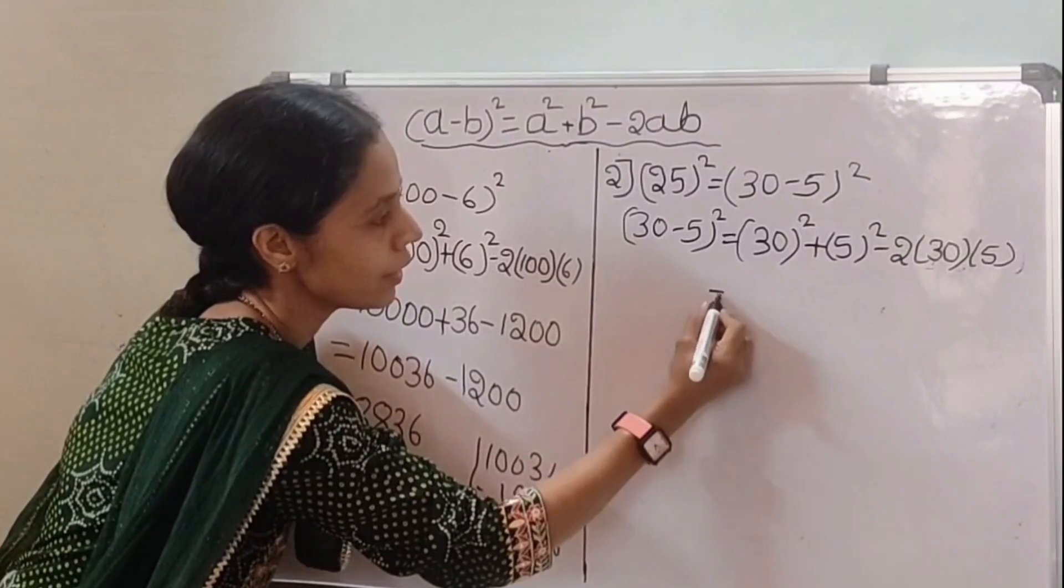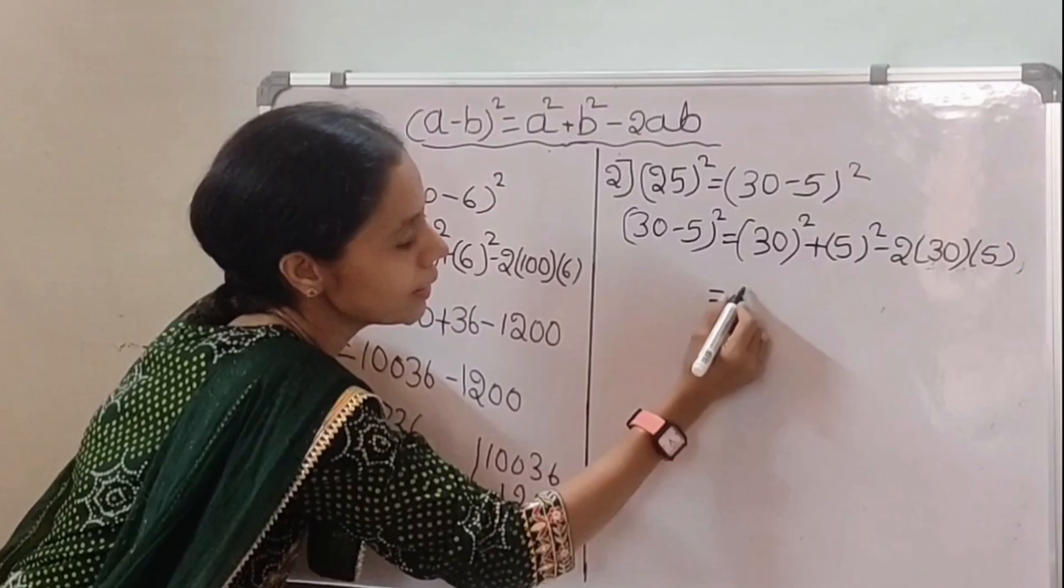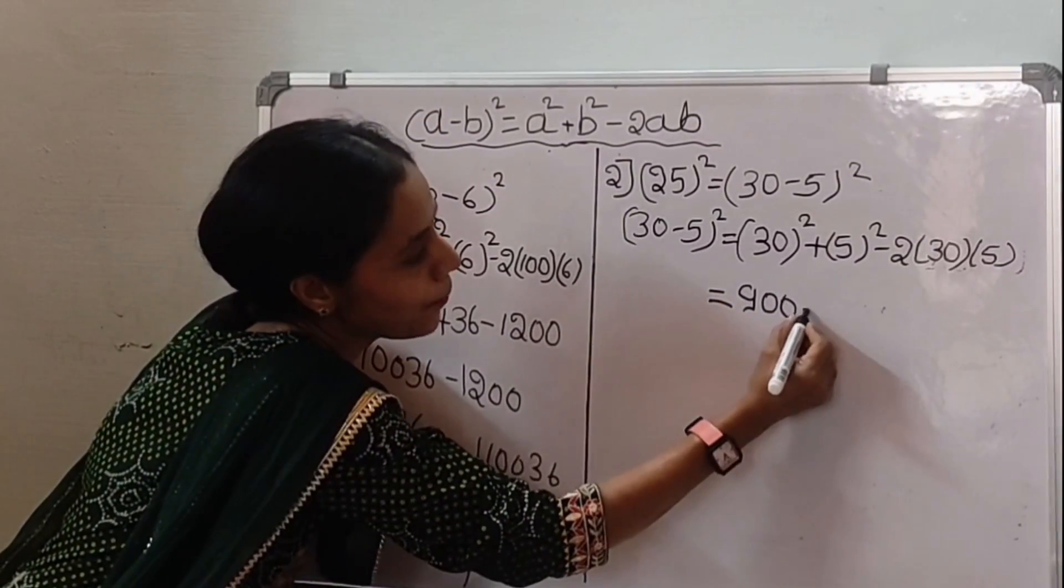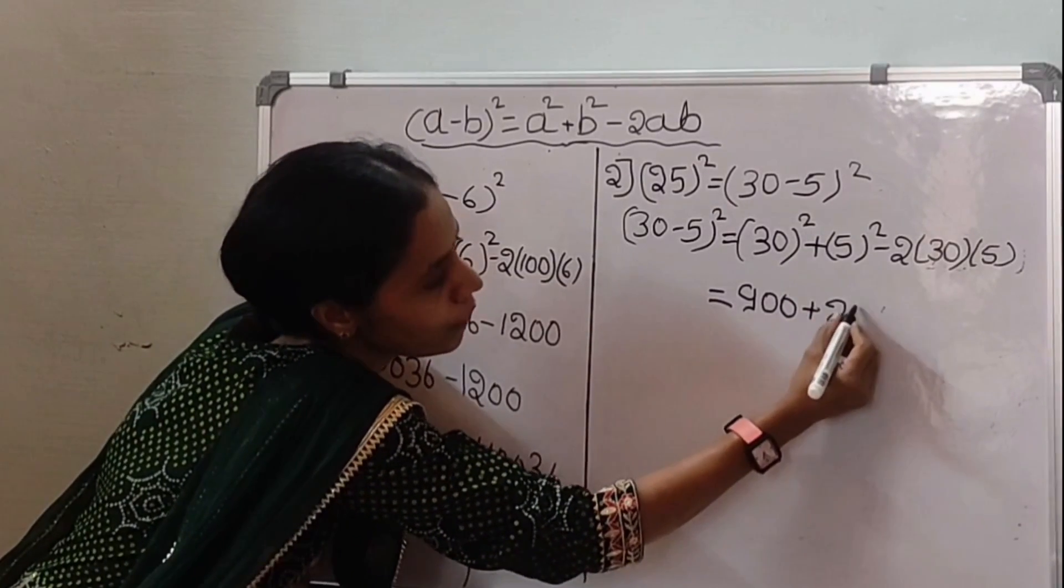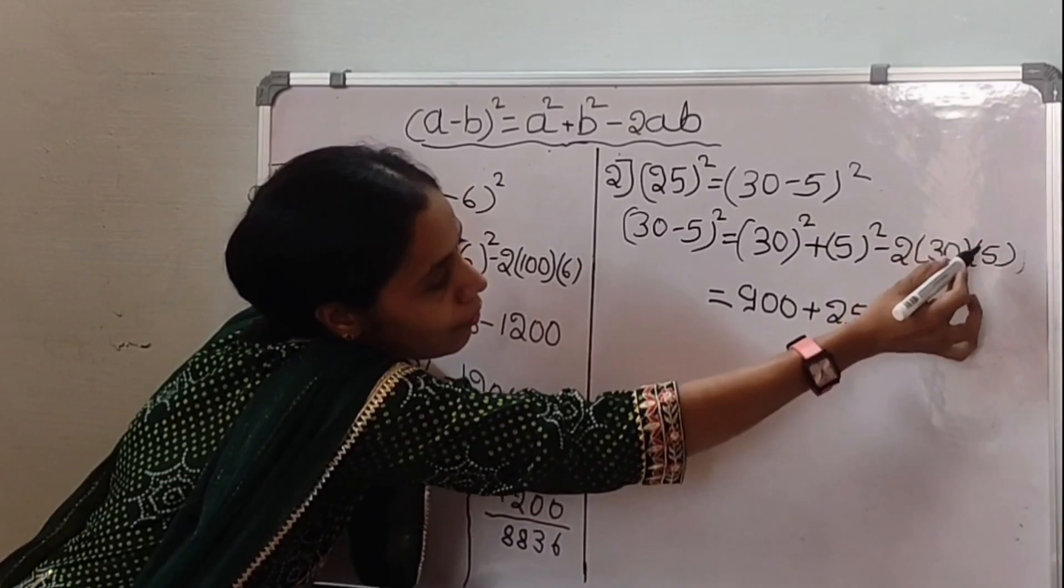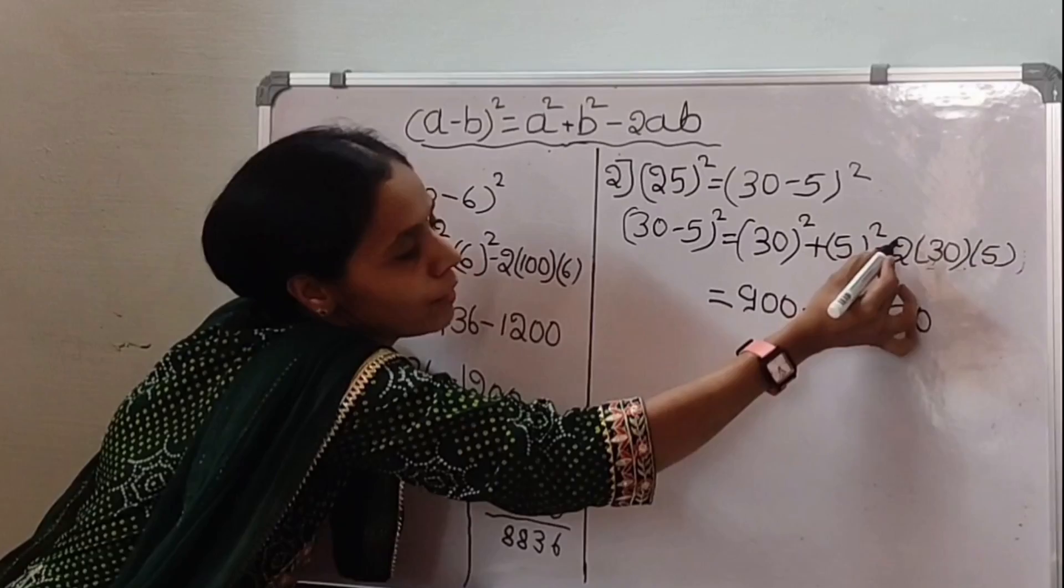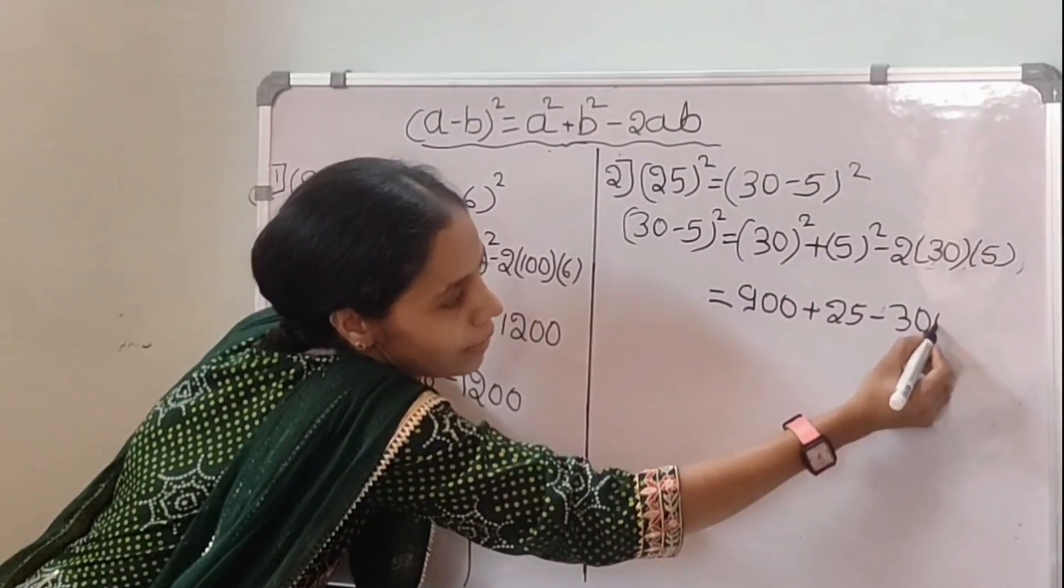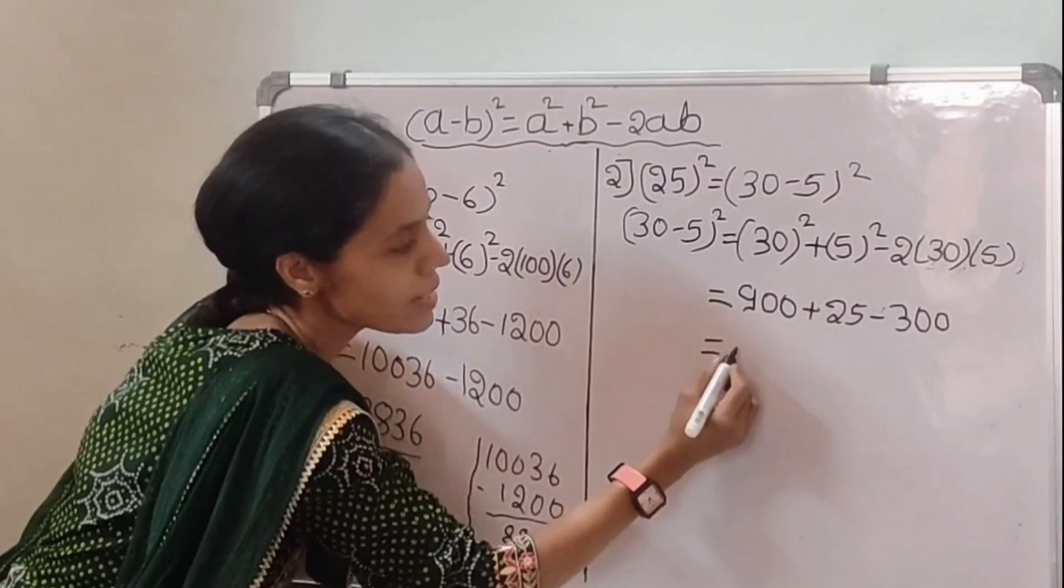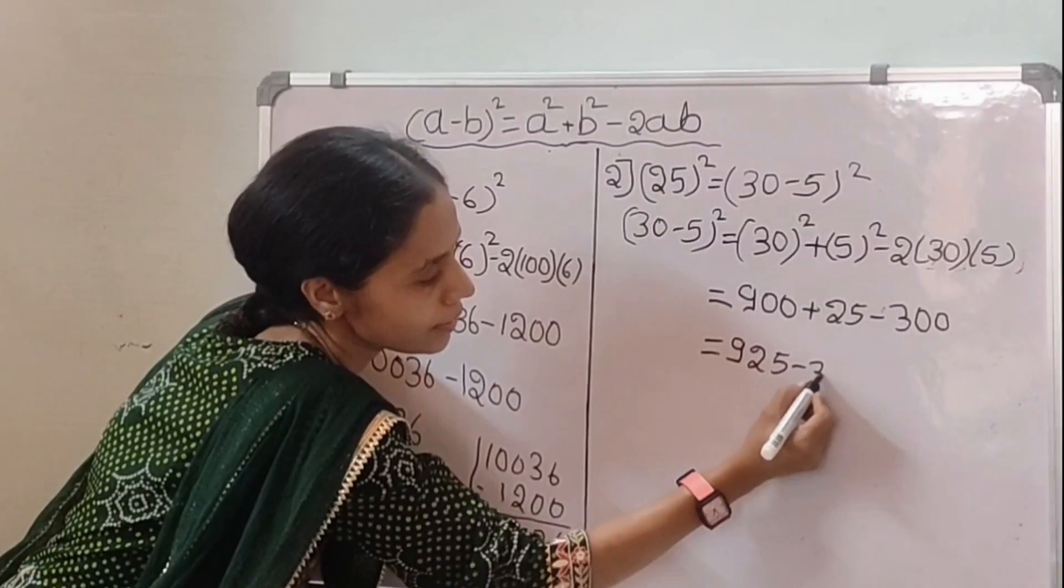30 - 5 whole square is equal to 30² + 5² - 2 × 30 × 5. After 35, we get the square of 25. 30² is 900 + 5² is 25 - 2 × 30 × 5 is 300. After simplifying, 900 + 25 - 300.